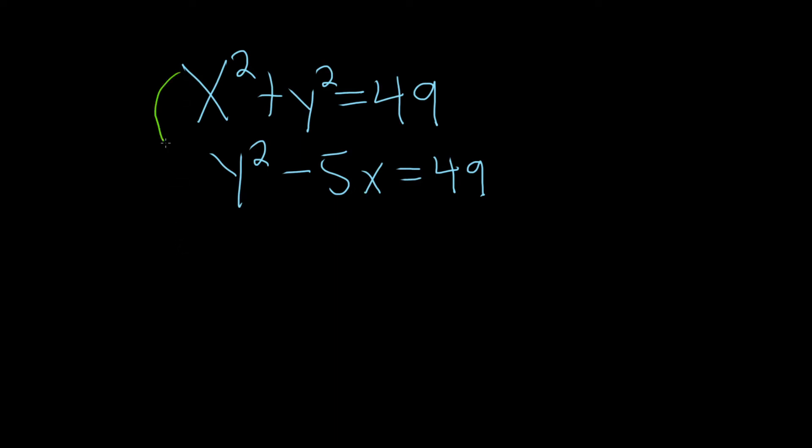In this problem we have a non-linear system of equations and we have to find the solutions. There's a couple ways to do this. I think maybe we should try to do it with what's called the addition or elimination method. The way that works is basically you multiply one equation by a number and then add it to another equation. Let's maybe multiply the first one by negative 1 and add it to the second one.